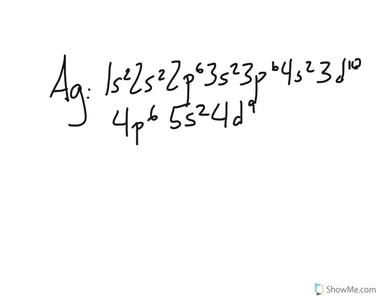Now that's a long electron configuration. We don't need to actually write it out like this if we're going to write this in noble gas notation. We would just pick the closest noble gas to this. So it would be krypton. Krypton.